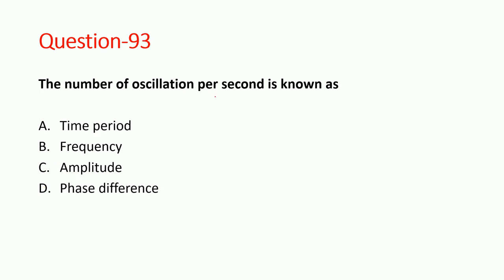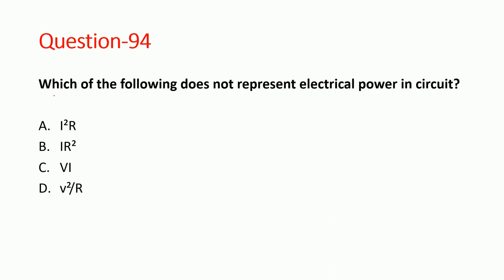Next question: the device used to measure the speed of wind is the anemometer. Option D is correct. The number of oscillations per second is known as frequency. Option B is correct. Next question: which of the following does not represent electric power in a circuit? Electric power is I²R, V·I, or V²/R. The formula IR² is wrong. Option B is correct.